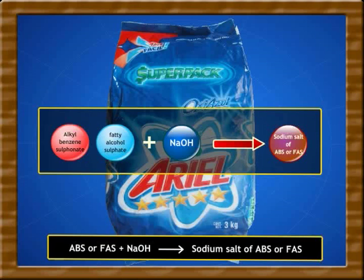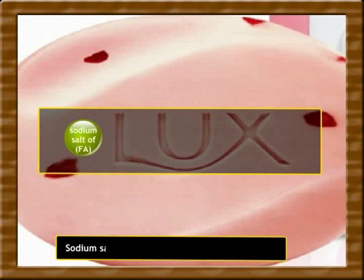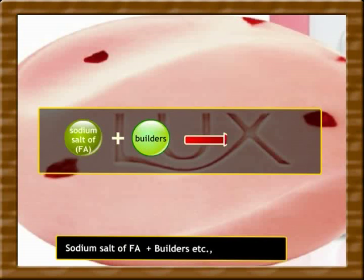In the third step of their preparation, sodium salt of ABS or FAS reacts with a base called a builder to form detergents.